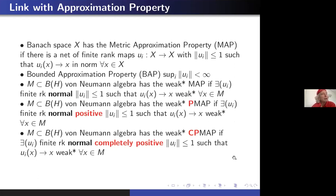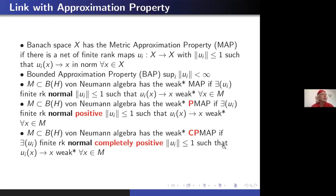Further, we need the positive version: a von Neumann algebra has the weak-star positive metric approximation property if we have a net of positive finite-rank normal contractive maps which tend weak-star to the identity. And continuing naturally, a von Neumann algebra has the weak-star completely positive metric approximation property — the weak-star CP-MAP — when we ask for the finite-rank maps to be completely positive and converge weak-star to the identity.